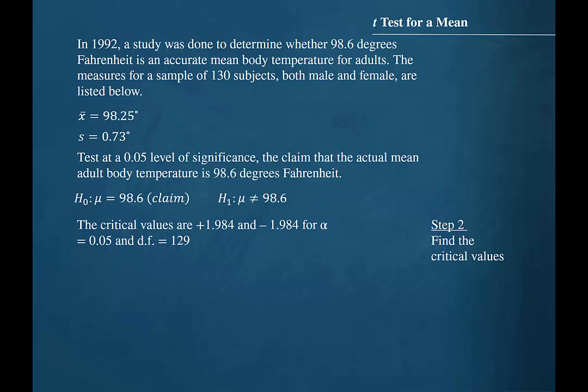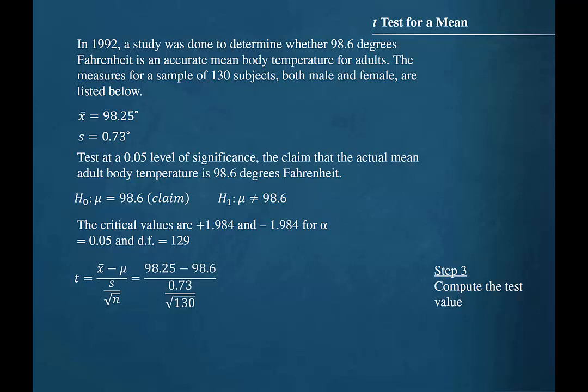Step three is to compute the test value. We will use the formula x-bar minus mu divided by the standard error of the sample means, which is the sample standard deviation divided by the square root of the sample size. Substituting these values into the formula results in a t-test value of negative 5.47.